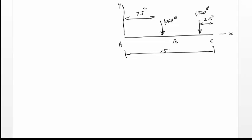We show now beam A, B, C, with x and y-axis shown, and then we have one load of 1000 N at a distance of 7.5 meters, and P1 was 1500 N at a distance of 2.5 meters from C. The total length of the beam is 15 meters. The reactions are at A, we have Ax and Ay. At C, Cy.